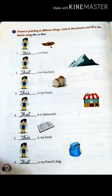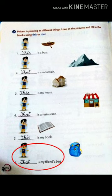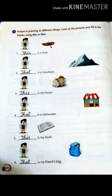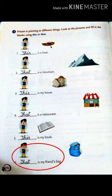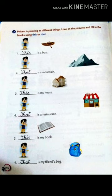Number six is: dash is my friend's bag. You will fill here 'that', because the bag is far from Pritam. That is my friend's bag.